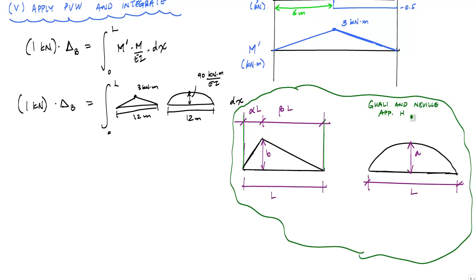This product of a triangle and a parabola or parabolic function is equal to A, B, L over 3, times 1 plus alpha beta.